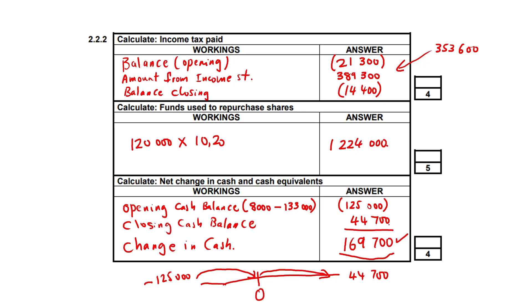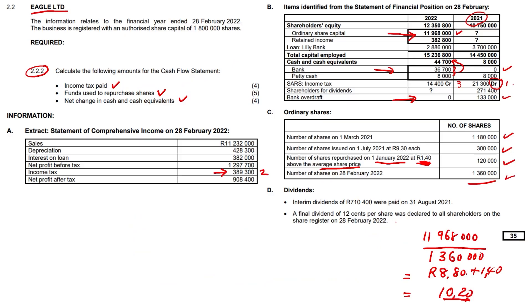I trust you found this segment useful. The aspects we covered were: income tax paid, funds used to repurchase shares, and net changes in cash and cash equivalents. Thank you.